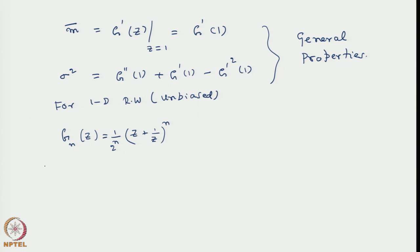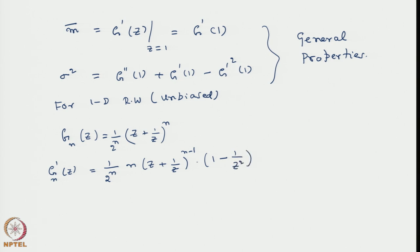Taking the derivative g_n-prime(z), we get 1/2^n times n times (z + 1/z)^(n-1) times (1 minus 1/z squared). Evaluating at z equal to 1, this particular term goes to zero. In fact, at z equal to 1 it is exactly equal to zero. This means m-bar equal to 0, which is expected - that is why it is called a symmetric random walk.